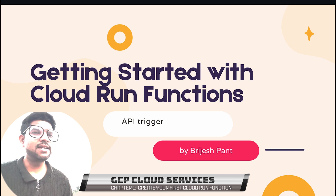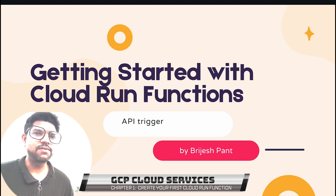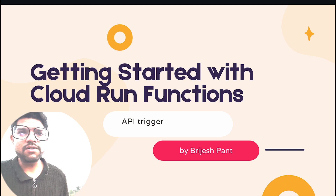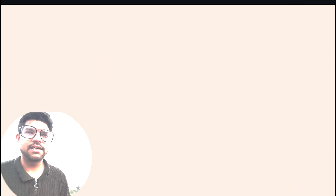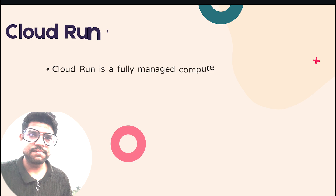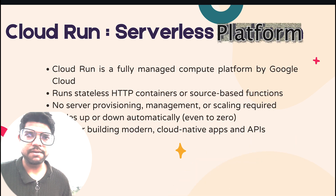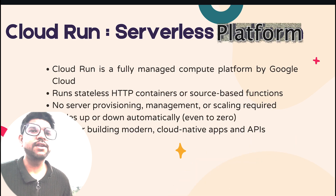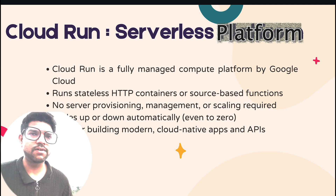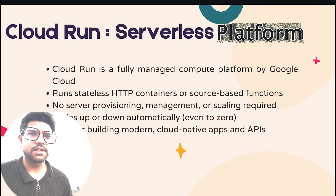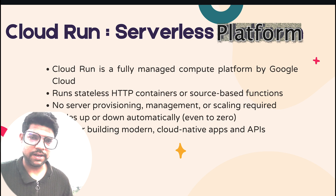Before that, let's try to understand what is Cloud Run Function. Cloud Run Function is a Cloud Run, which is a serverless platform provided by GCP. Here, you can define your stateless containers or you can also define your function, which is source code deployed to a GCP platform.